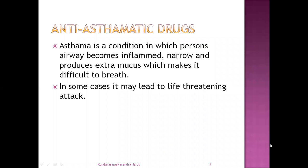The first one: anti-asthmatic drugs. So what is asthma? Asthma is a condition in which the person's airways become inflamed — that is, the airways become narrow and inflamed, and they produce some extra mucus. This extra mucus obstructs the path of the respiratory system. Because of that obstruction, the person cannot breathe properly. That is called asthma.